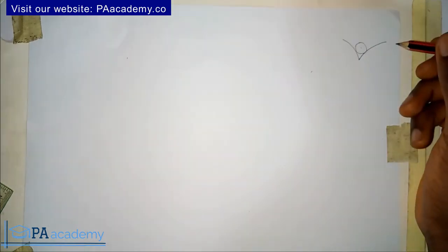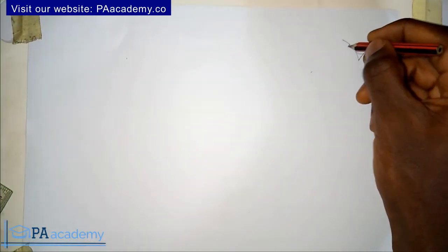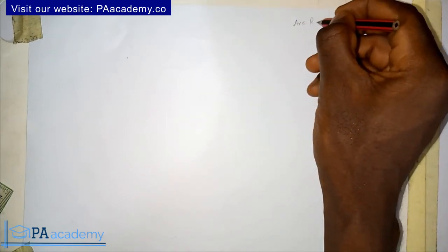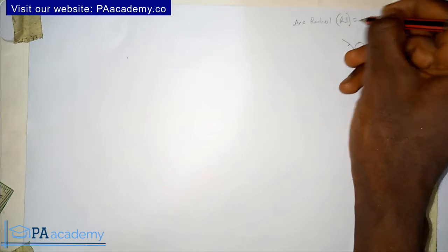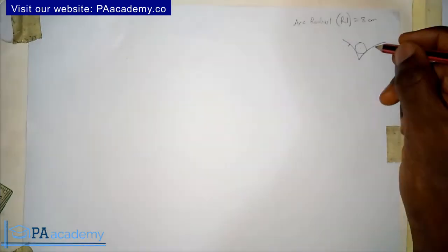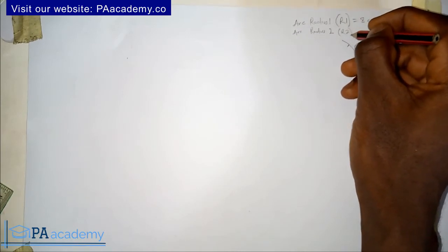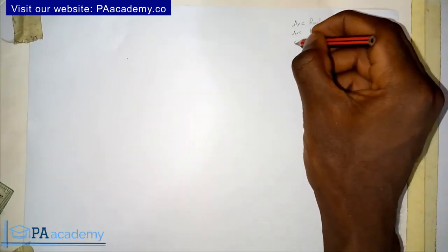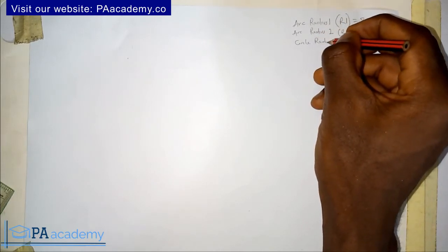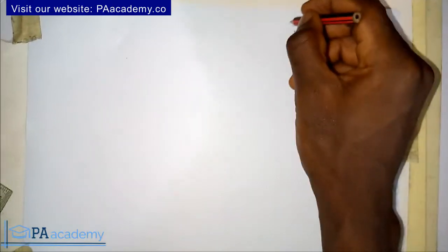We have two arcs — this is one arc and this is another arc, and this is the circle of a given radius. For this example, let's define our parameters: arc radius one, let's call that R1, and use a radius of 8 centimeters. The second arc, arc radius two, let's call that R2, and use 10 centimeters. For the circle, let's use a circle radius — let's call that small r — of 2 centimeters.